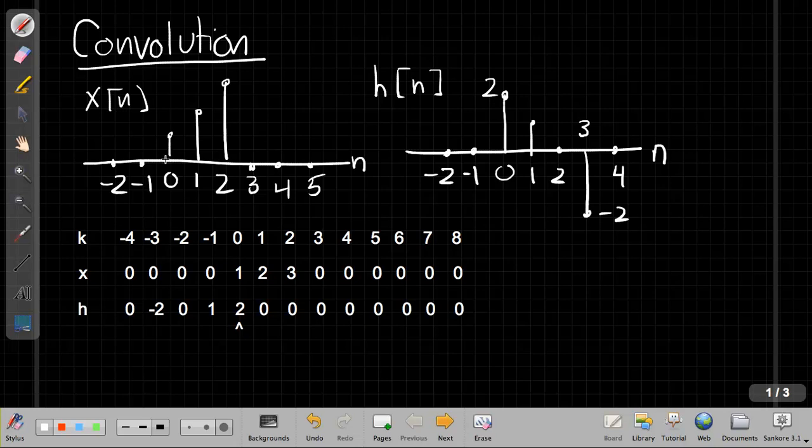So here's x of n, and the values are just 1, 2, and 3, starting at 0, 1, and 2. And then our impulse response h of n is 0 up until time 0 where it's 2, and then 1, and then 0, and then minus 2.